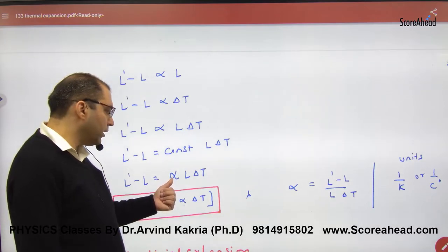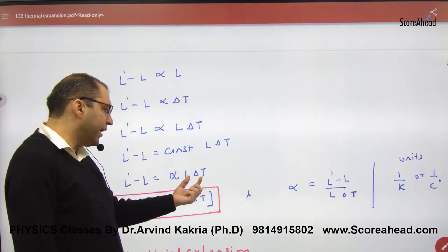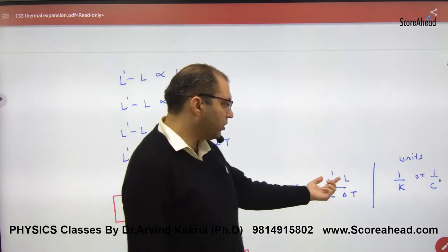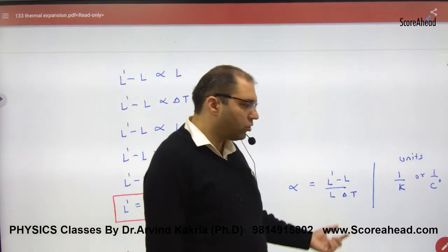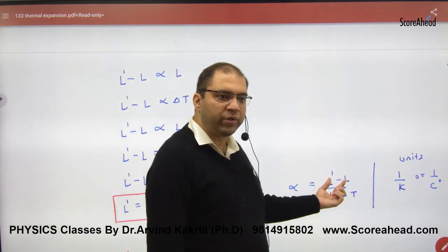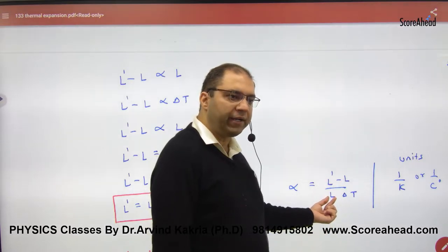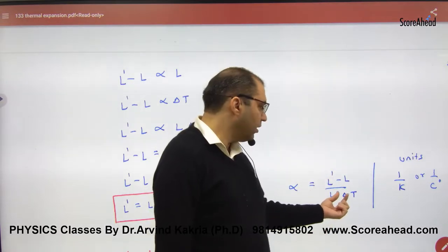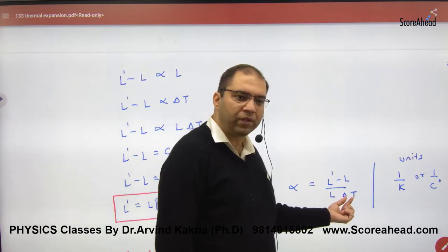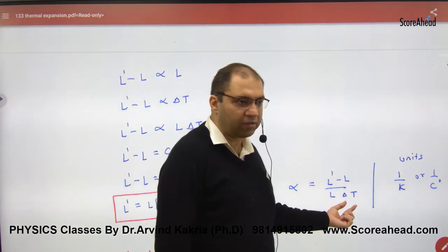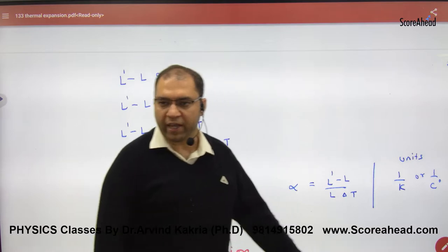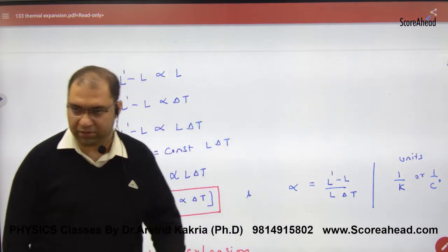Rearranging for alpha: α = (L' - L)/(L·ΔT). What are the units of the numerator? Meters. Denominator has length in meters, so meters cancel. ΔT units are either Kelvin or degree Celsius. So alpha's units are either 1/Kelvin or 1/degree Celsius.